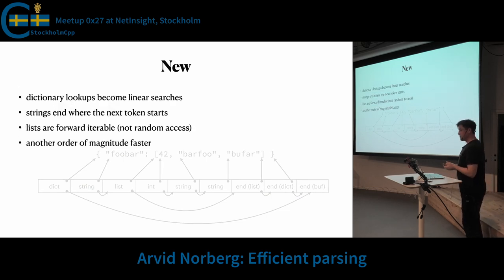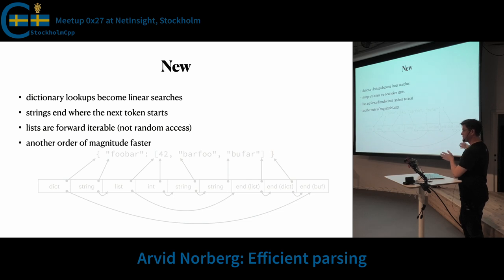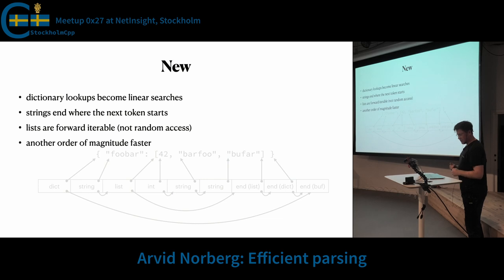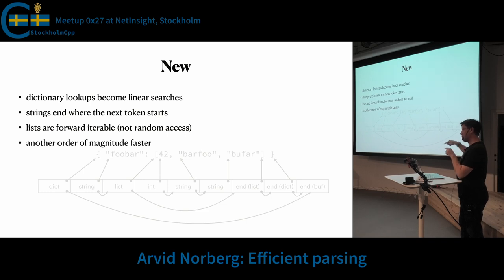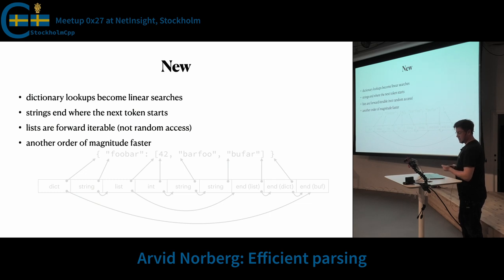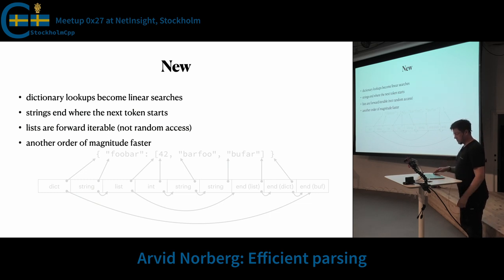There are some additional constraints with this setup. When you do a dictionary lookup you now need to do a linear search through your keys, which in my use case is fine. It also means that lists are not random access — you have to iterate through the list from the beginning to the end. This implementation is approximately another order of magnitude faster.